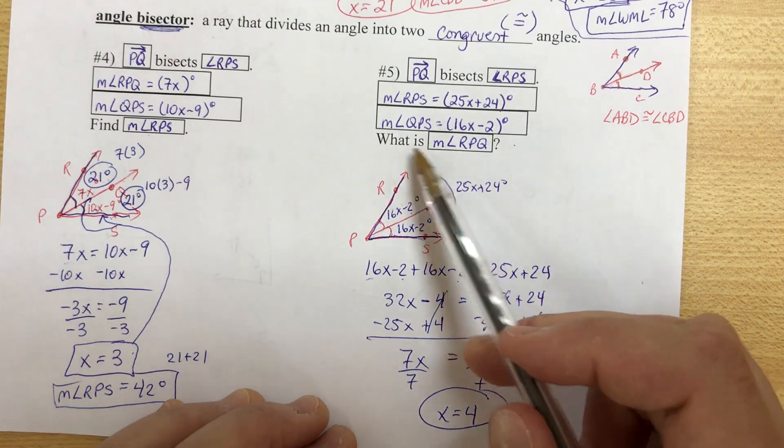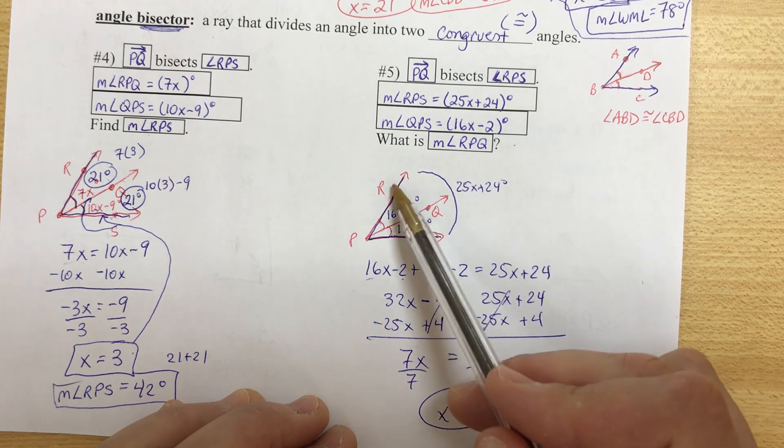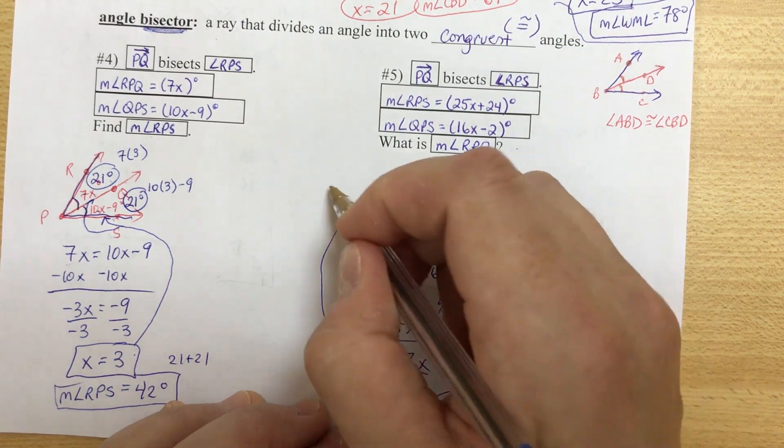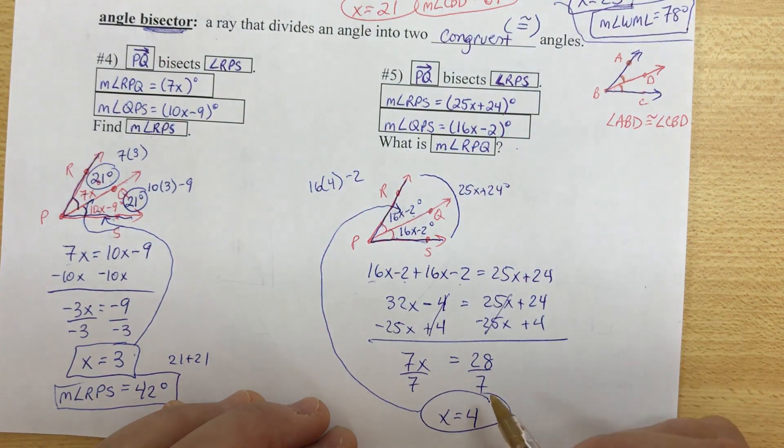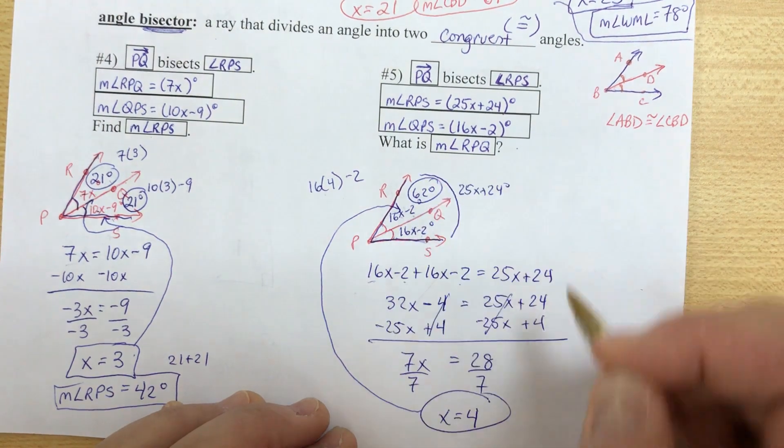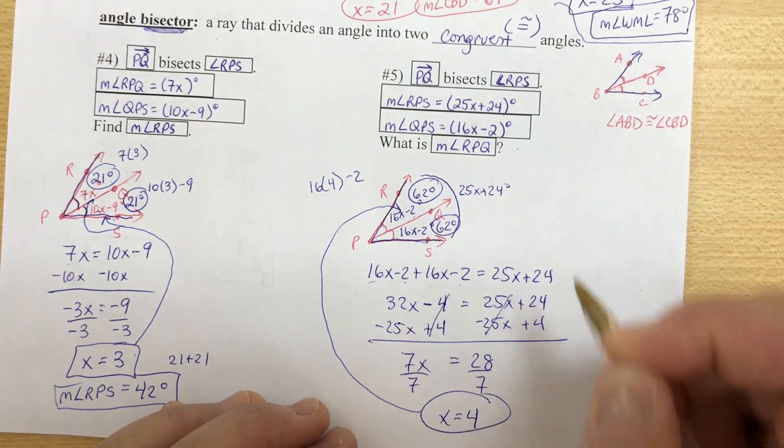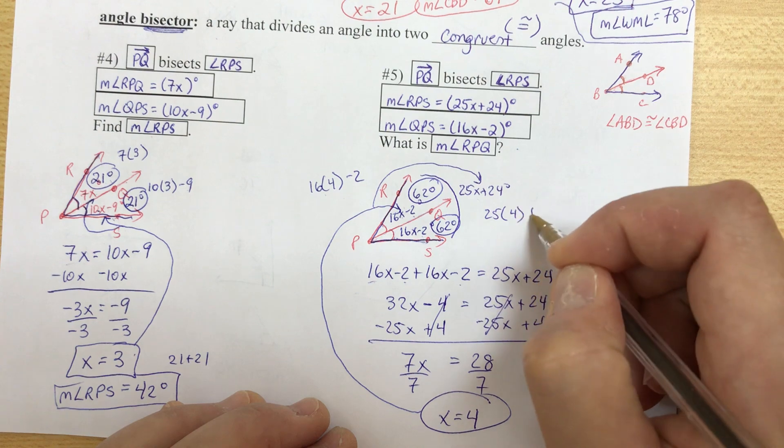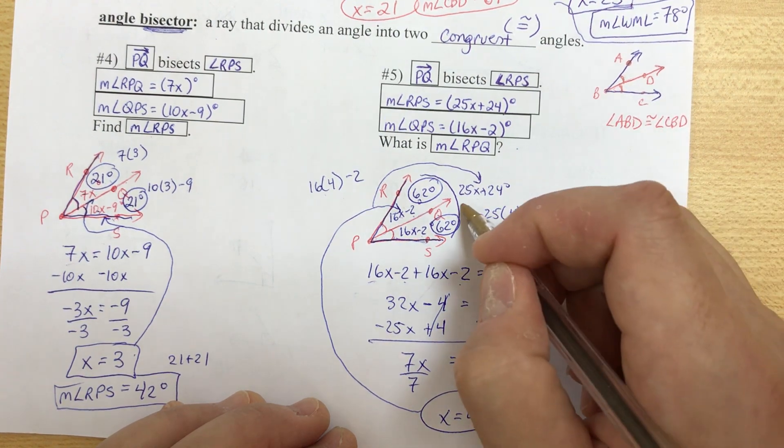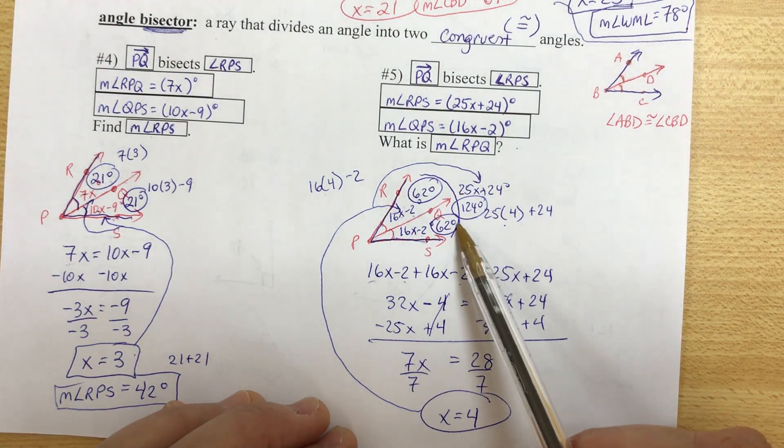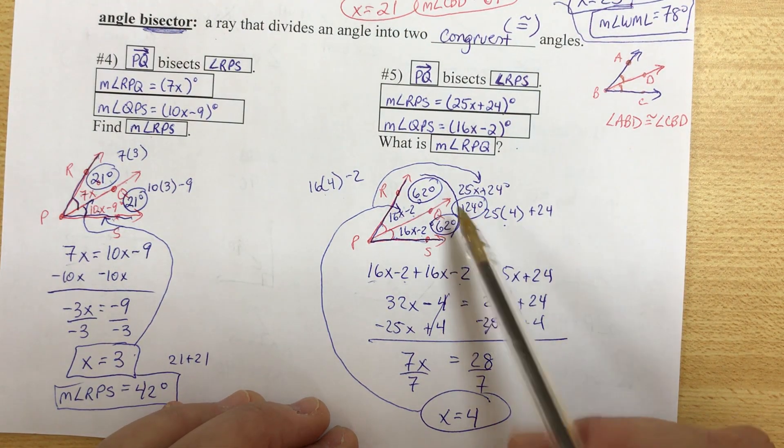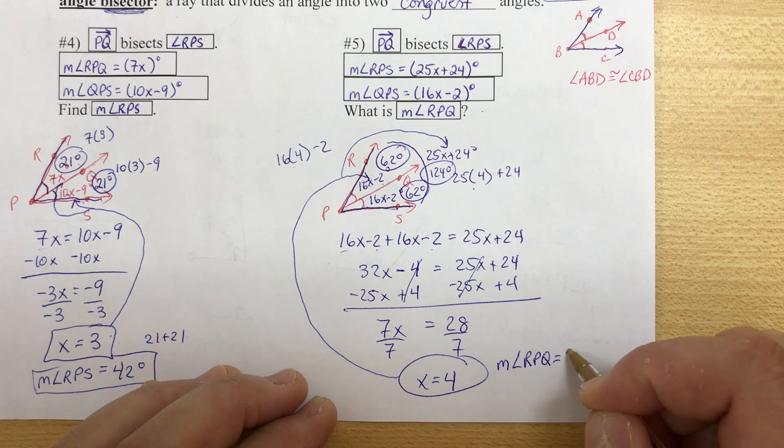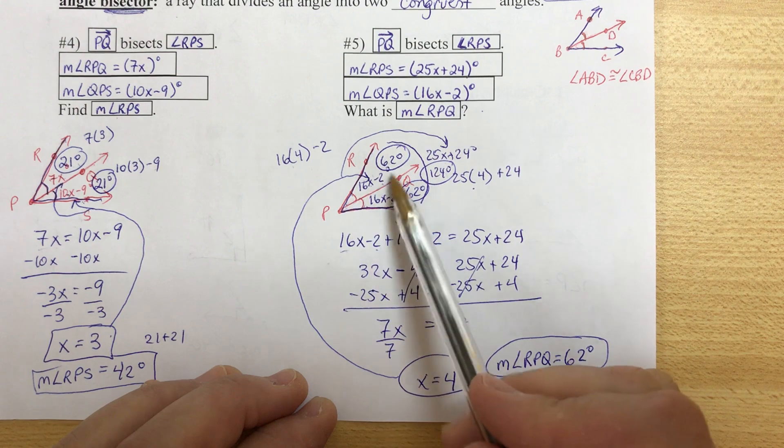Now, what we want though, what is the measure of angle RPQ? RPQ is this small one. Let's take the 4. Let's go back to the picture. We'll do 16 times 4 minus 2. 64 minus 2, that's 62 degrees. This would also be 62. And if I want to check, I can also plug in here. 25 times 4 is 100 plus 24 is 124 degrees. 62 plus 62 equals 124. So it's good. Everything works. The answer, the measure of angle RPQ, is 62 degrees. RPQ is 62.